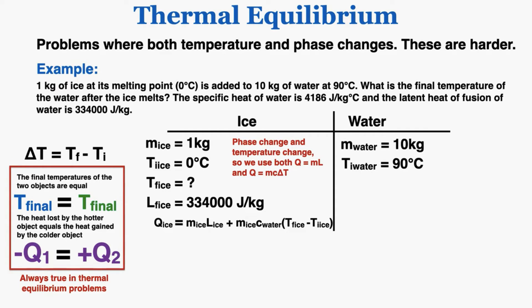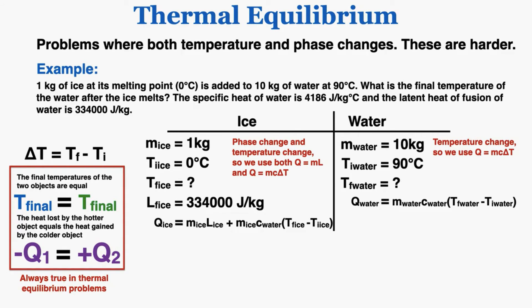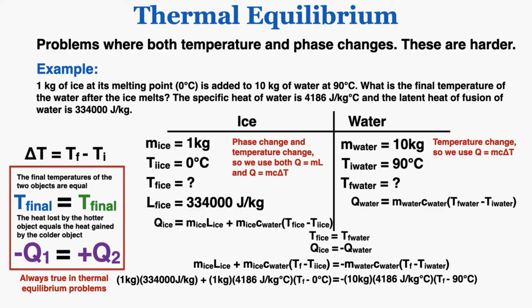The water has a mass of 10 kilograms, an initial temperature of 90 degrees Celsius, and we're finding the final temperature using Q = mcΔT. The heat taken out of the water equals the heat added to the ice. Since the final temperature is the same for both — call it T_f — setting the two equations equal gives one equation with one unknown. Even though the equation is long, there's only one missing variable, T_f, and we can always solve for a single variable using algebra.